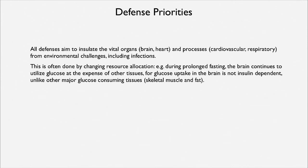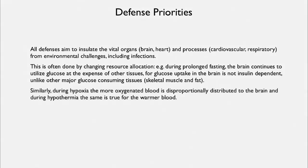During hypoxia, the more oxygenated blood is shunted to the brain, and during hypothermia, the warmer blood is shunted to the brain. That can be regulated through the aorta and the distribution going out to the muscles — just by controlling the diameter of the arteries, that can be done.